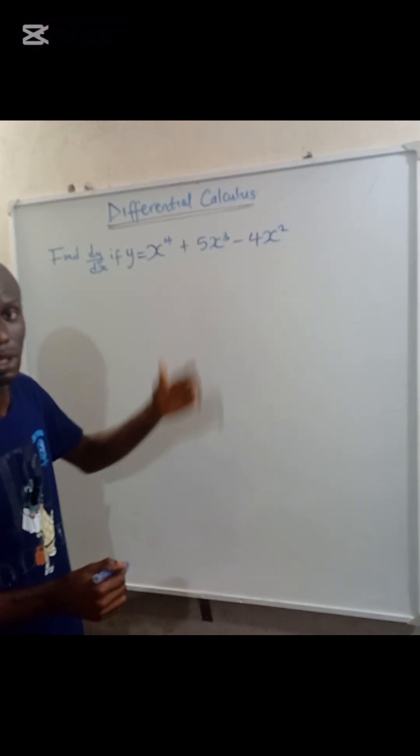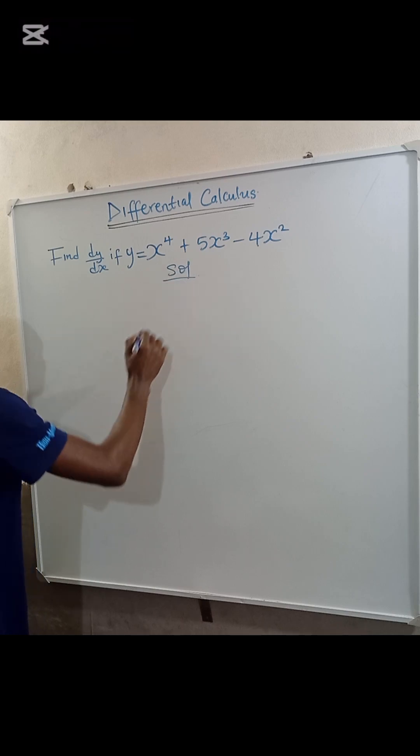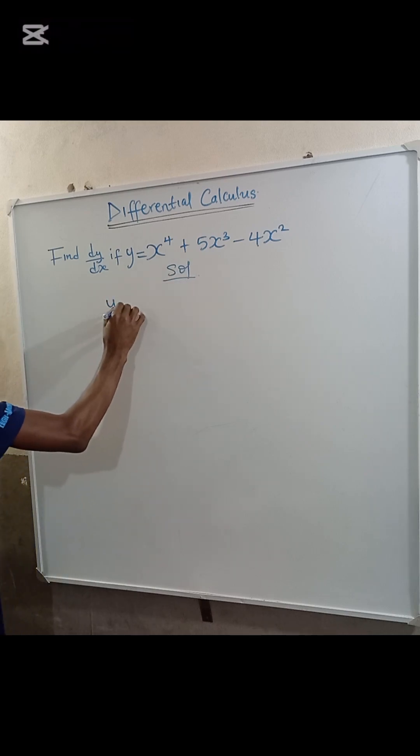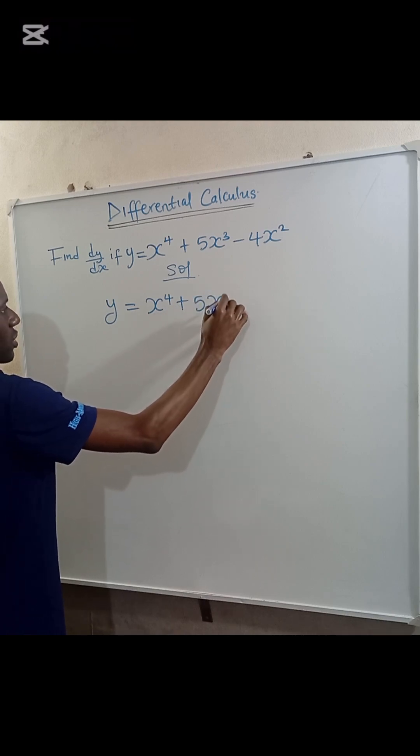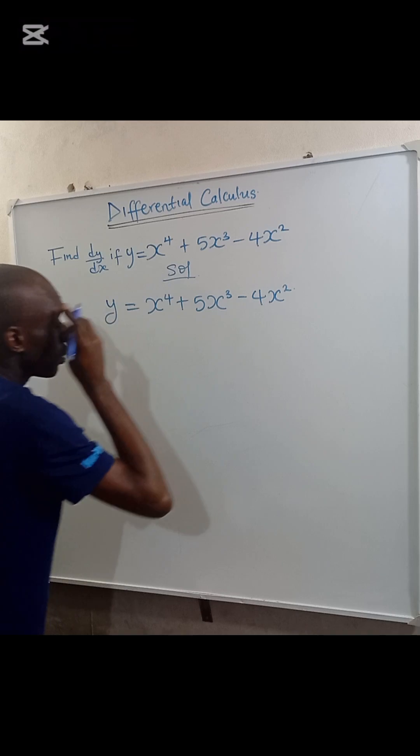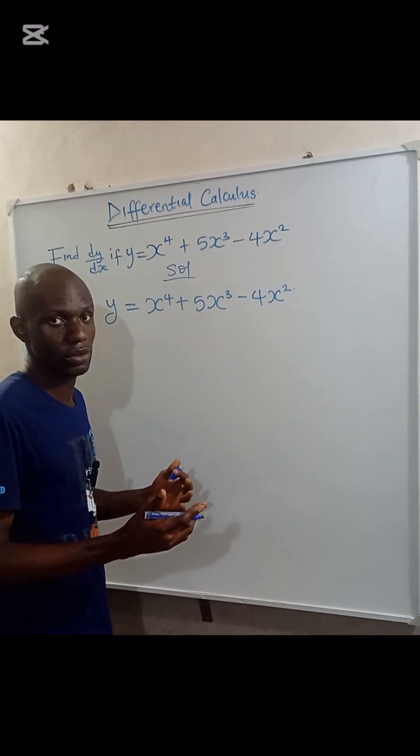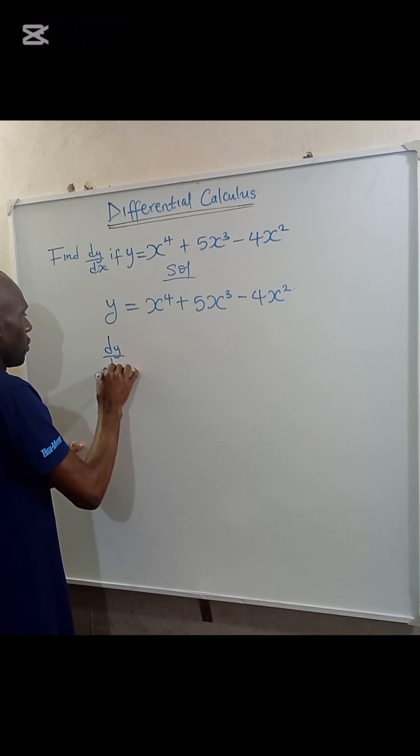So today we are talking about differential calculus. We have y equals x to the power of 4 plus 5x to the power of 3 minus 4x to the power of 2. For dy/dx, which is what we have here,